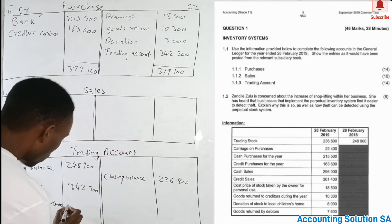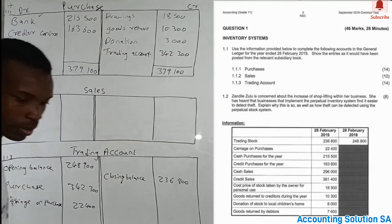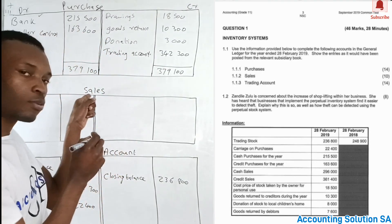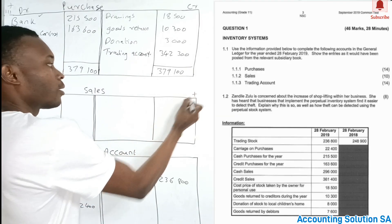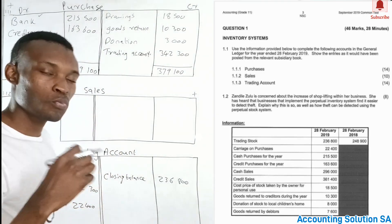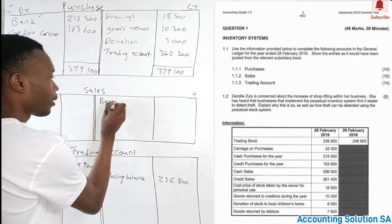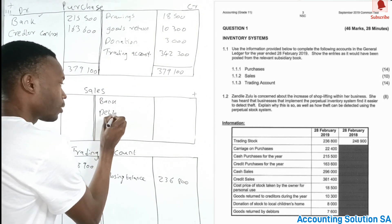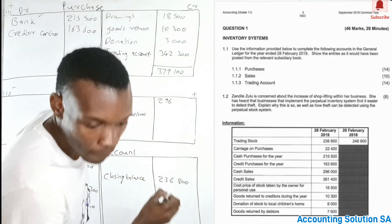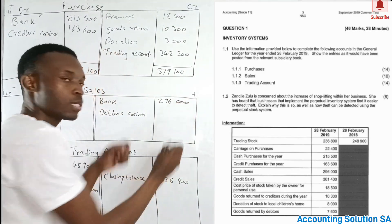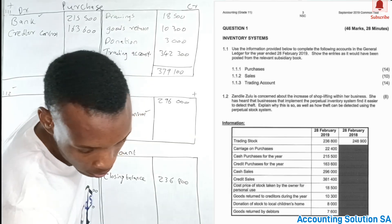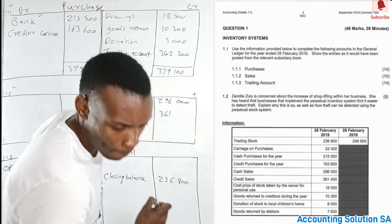Carriage on purchases is 22,400. Now for the sales account — sales increase on the credit side and decrease on the debit side. For cash sales we use the word 'bank', and for credit sales we use 'debtors control.' The cash sales amount is 296,000, and the credit sales amount is 361,400.